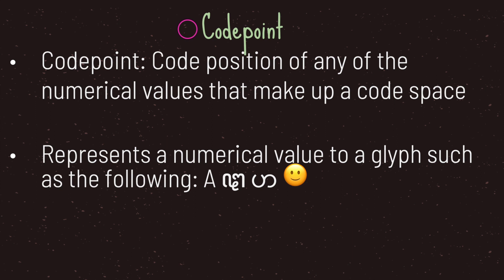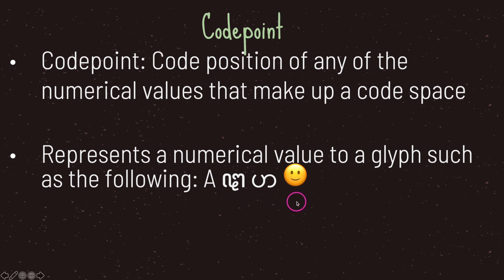You may be wondering what exactly is a code point. The dictionary definition is: a code position of any of the numerical values that make up a code space. An easier way of thinking about a code point is that it represents a numerical value assigned to a glyph. A glyph means characters but can be anything — a visual object. Examples include the uppercase A, glyphs from different languages, and the emoji. Code points tie a numerical value to a glyph.